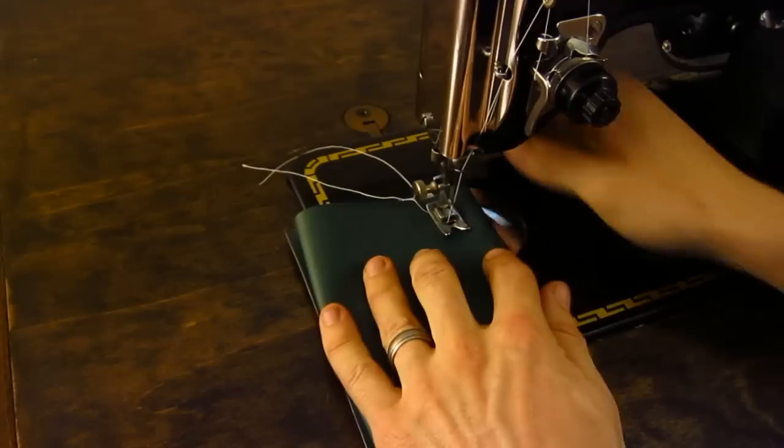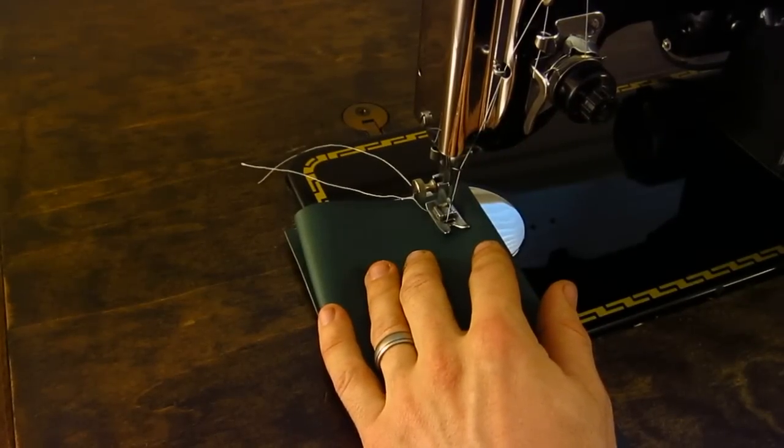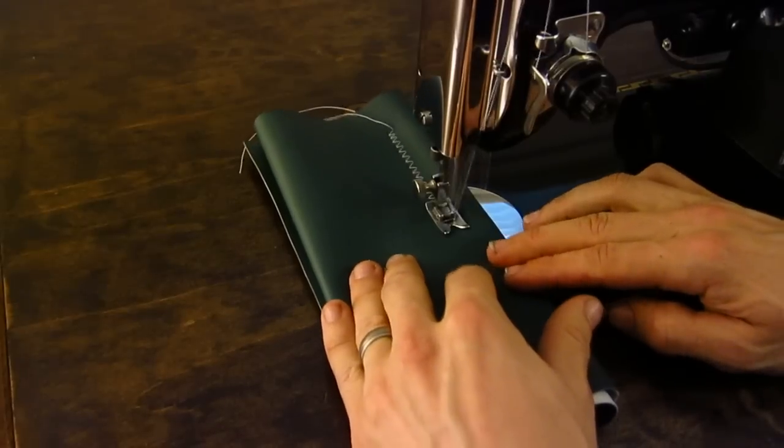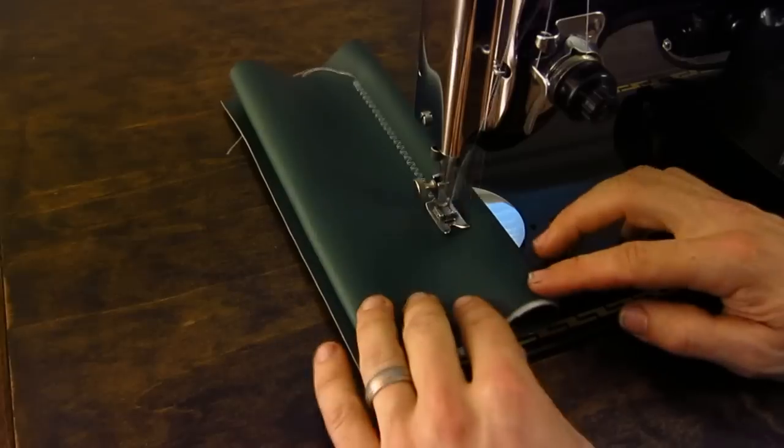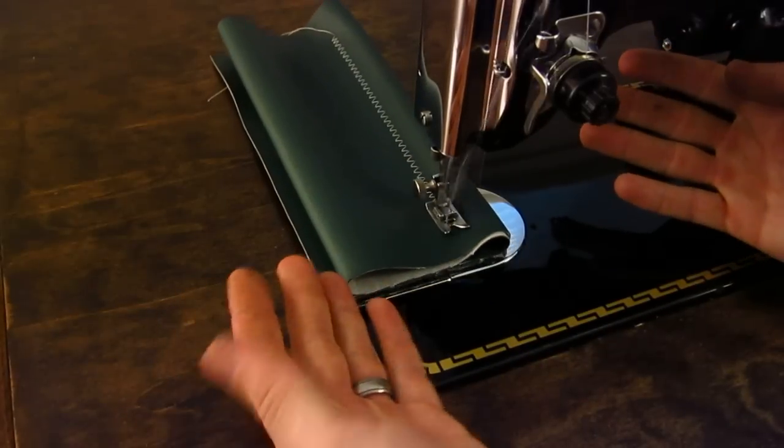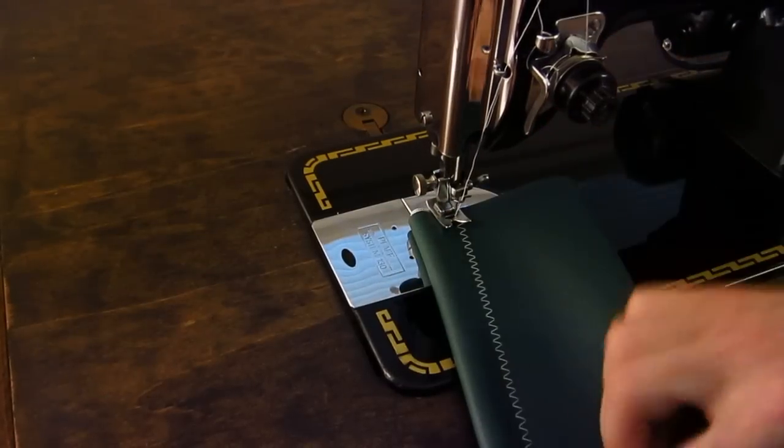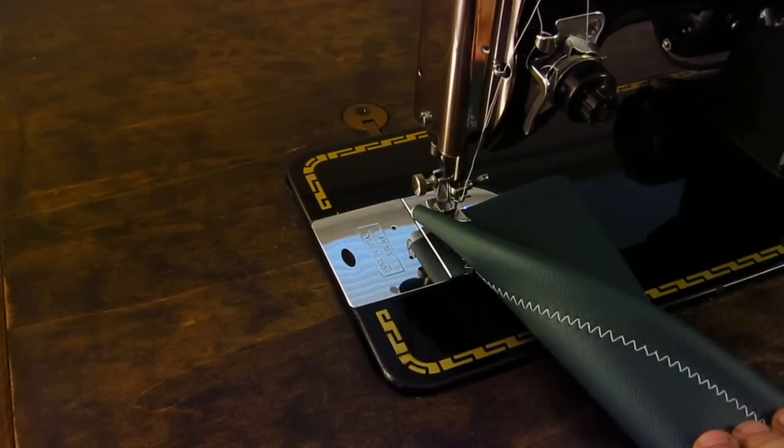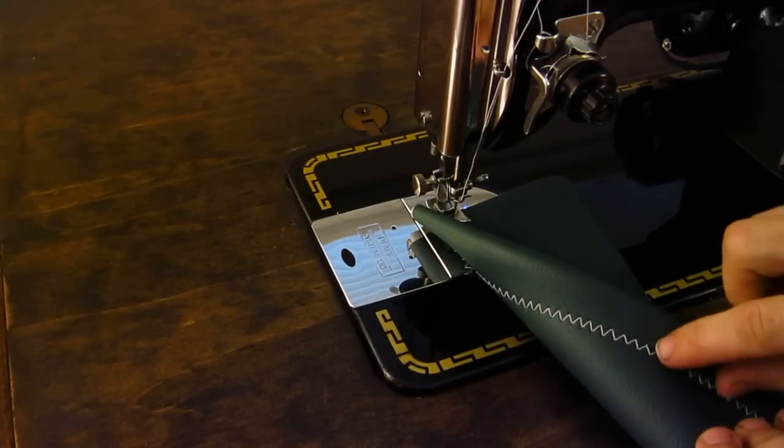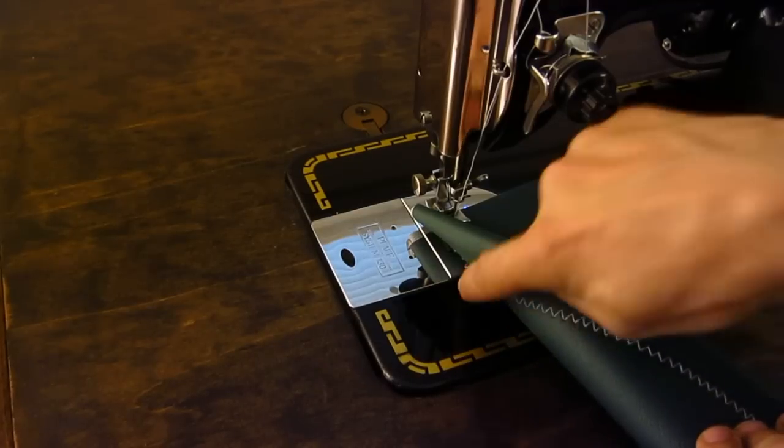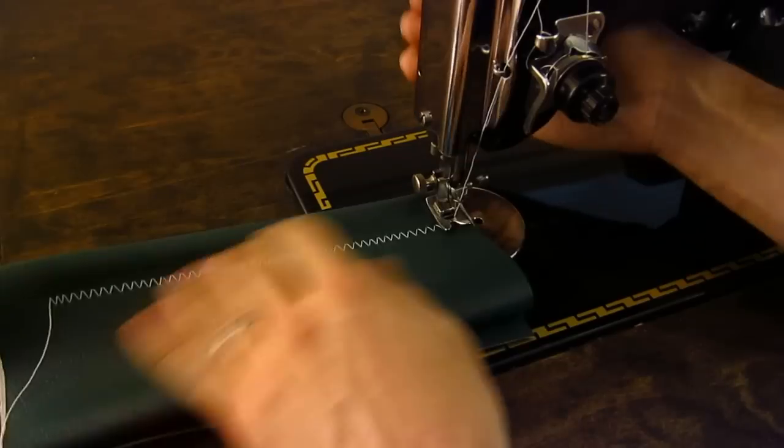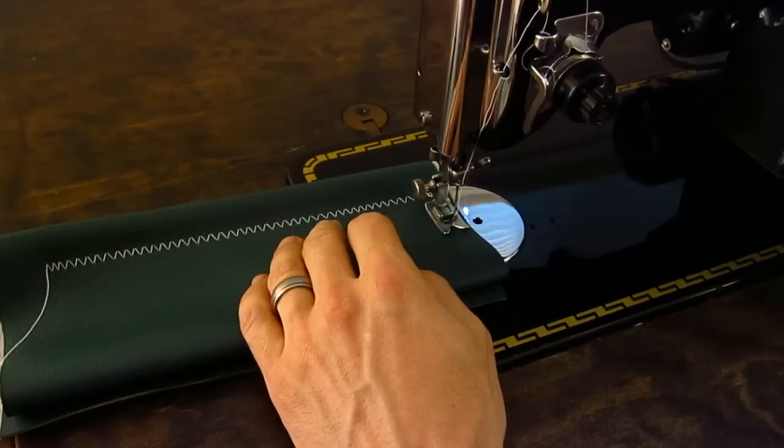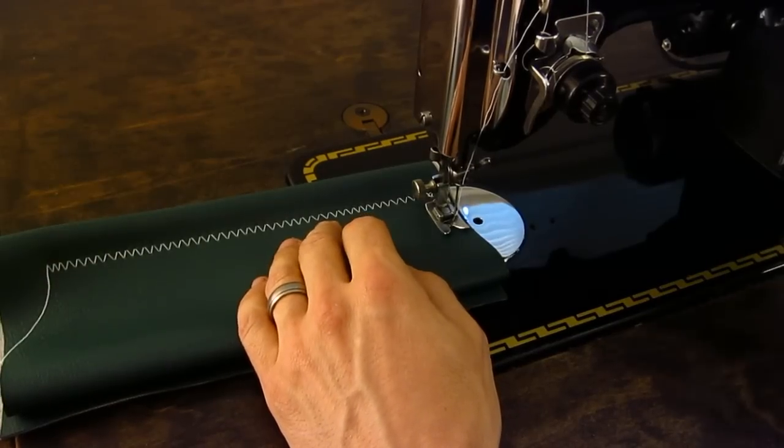And how well it feeds. So let's do a zigzag. We'll do this. And it feeds it. You can see I'm not touching it. It feeds the material through no problem. You get a really consistent stitch there. Top and bottom look really good. You could probably bump the tension up a little bit. It looks like a little bit could have been pulled up right there, but everything else looks good.